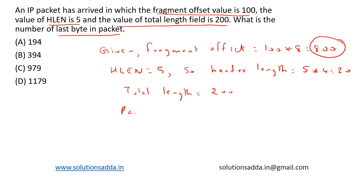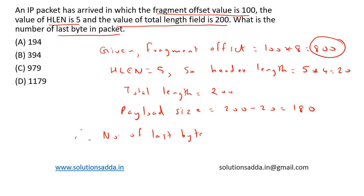Payload size is 200 minus 20, which is equal to 180. Therefore, the number of the last byte in the packet is equal to 800 plus 180 minus 1, which is equal to 979. So based on the options, option C, 979, is the right choice.